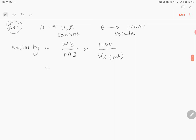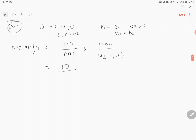So what is WB, weight of sodium hydroxide? Weight of sodium hydroxide is 10. MB is molar mass of sodium hydroxide, that is 40 grams, into 1000 divided by volume of the solution, 1500 mL. So if you compute this value, we will get 0.1667 moles per liter.